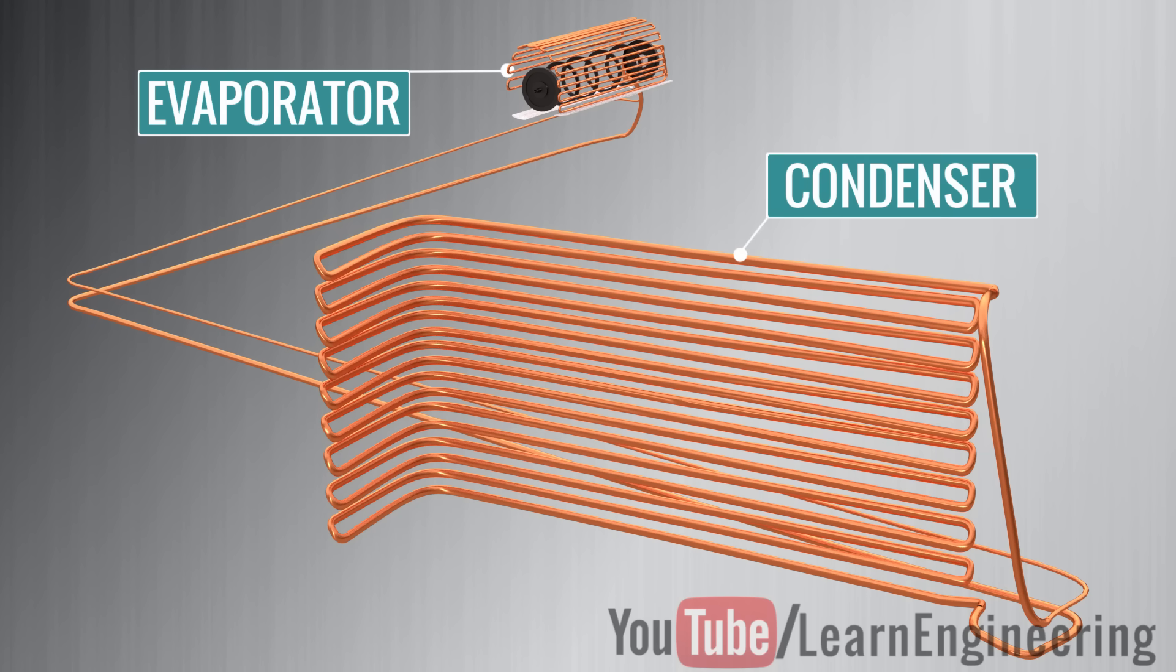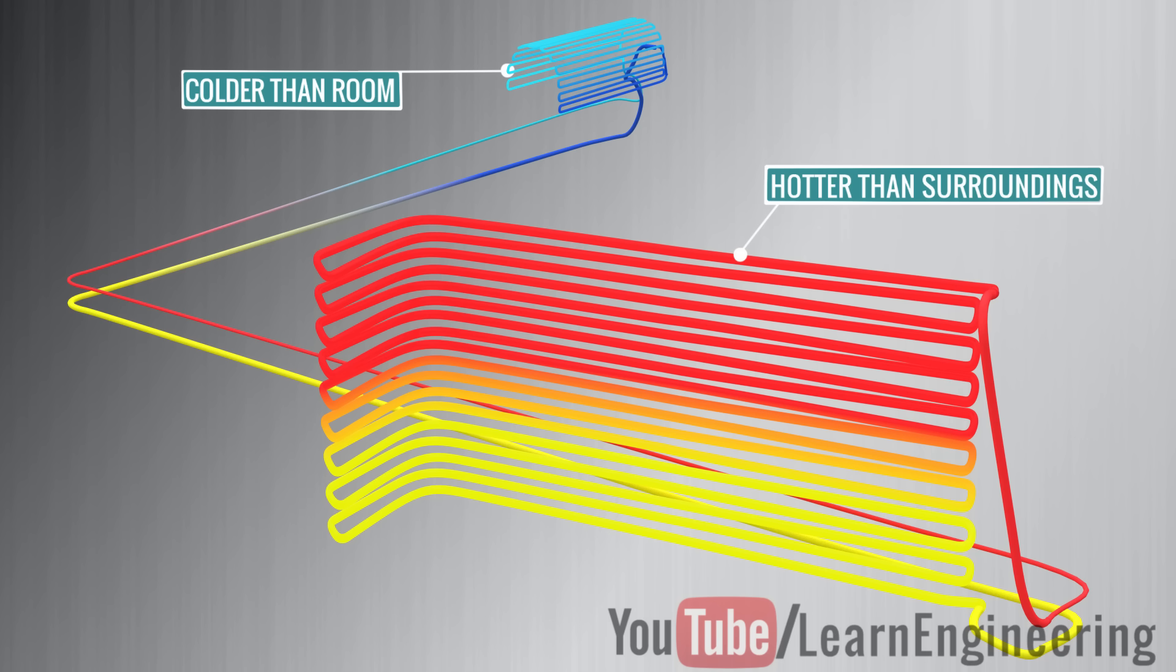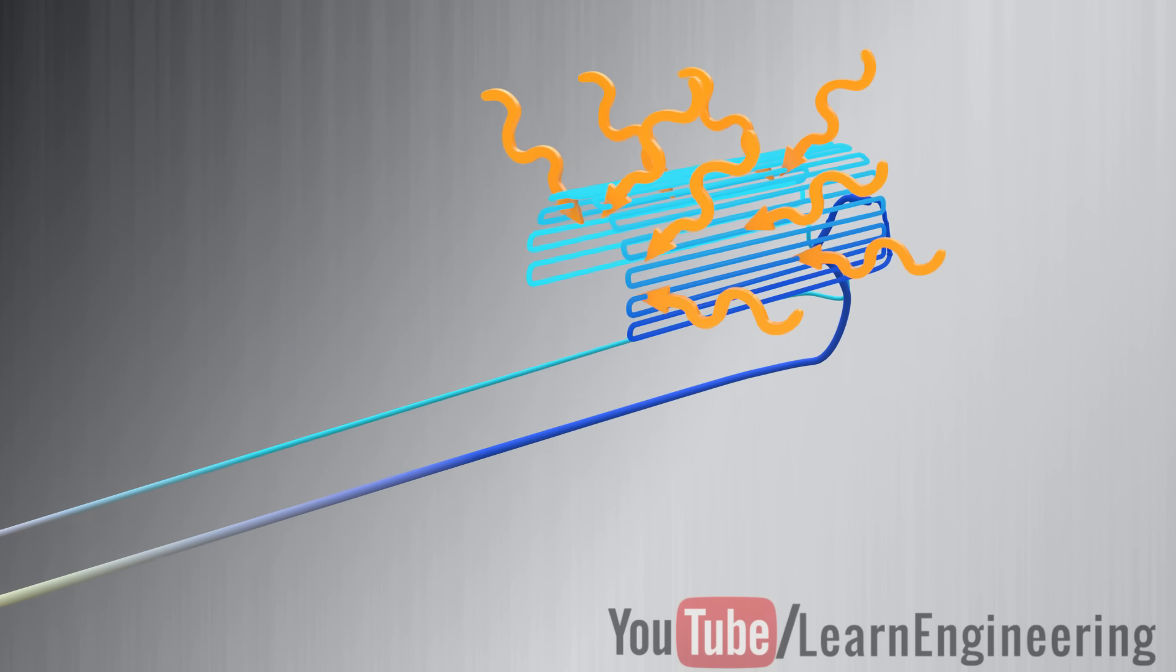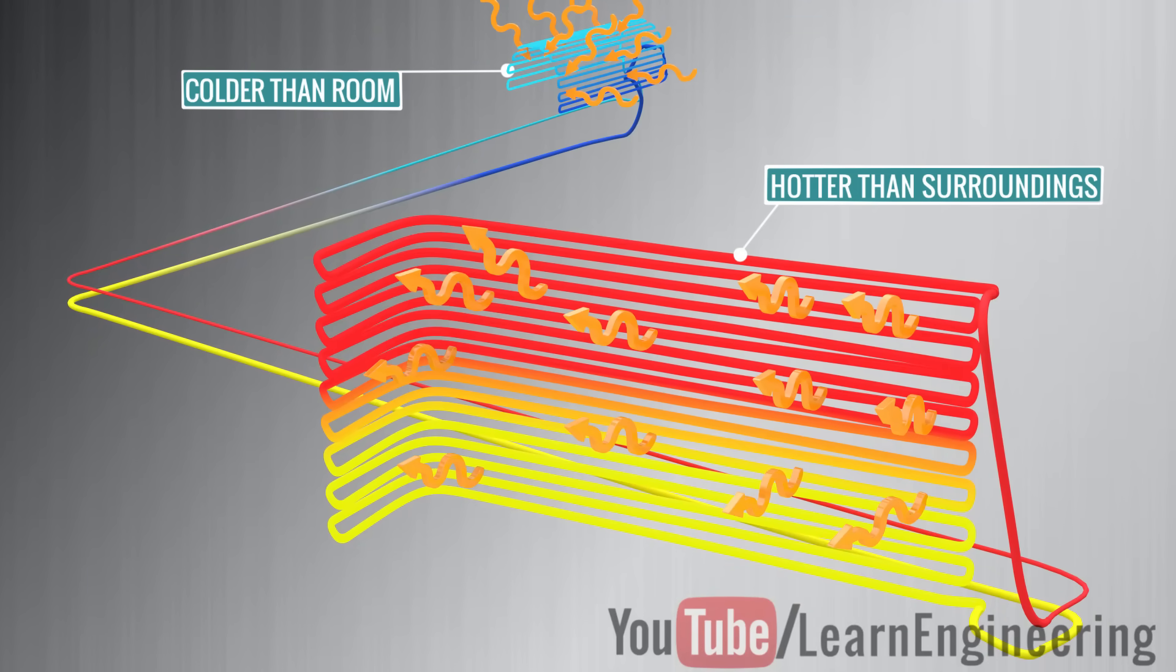The fundamental principle of an air conditioner is simple: just keep the evaporator cold, more specifically colder than the room temperature, and the condenser hot, more specifically hotter than the surroundings. With these conditions, the continuously flowing fluid will obviously absorb the heat from the room and eject it out to the surroundings. This is the fundamental rule of an air conditioner. Let's see how this rule is implemented in practice.